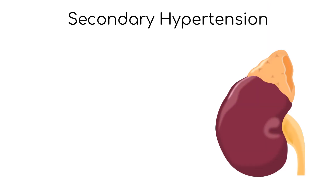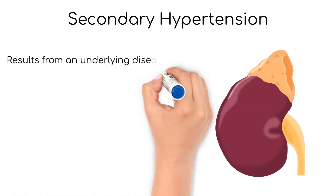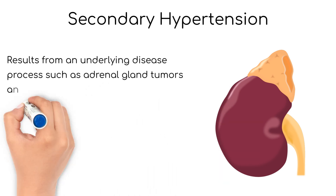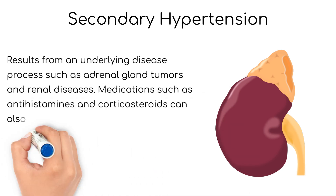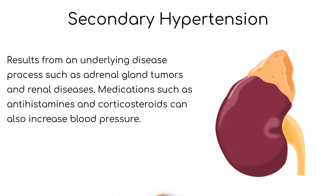Secondary hypertension results from an underlying disease process, such as adrenal gland tumors and renal diseases. Medications such as antihistamines and corticosteroids can also increase blood pressure.